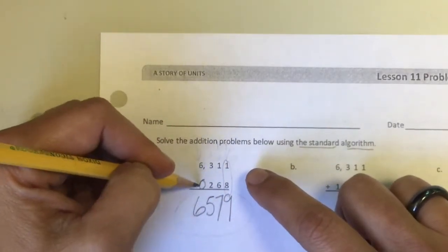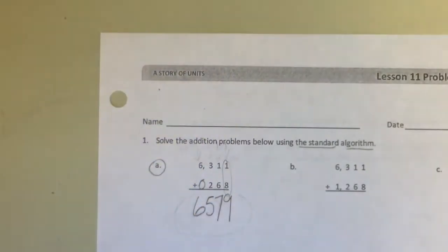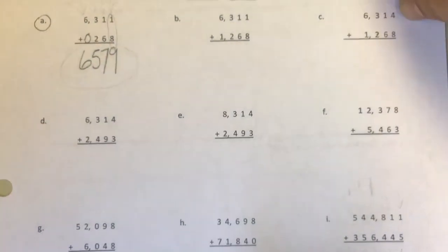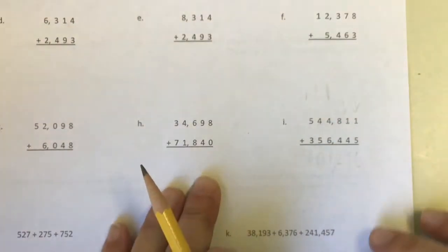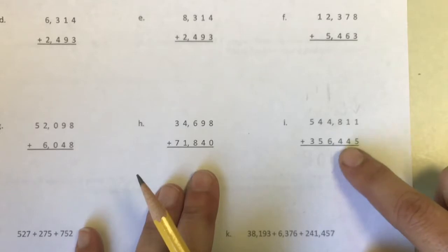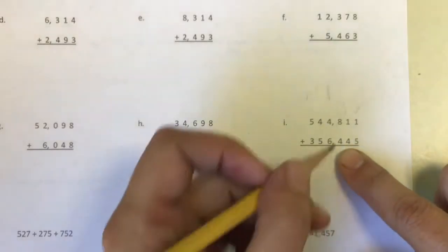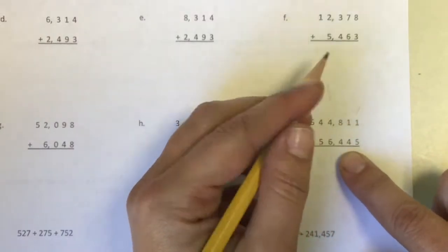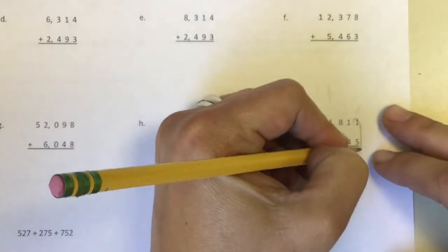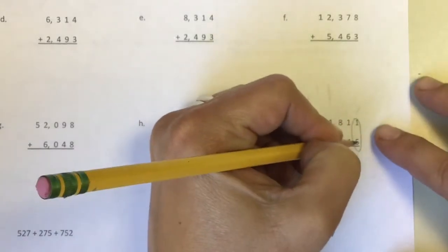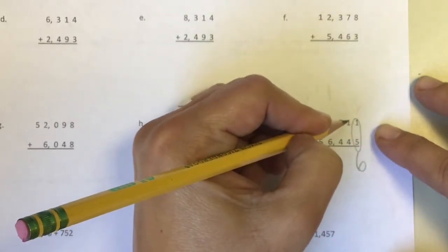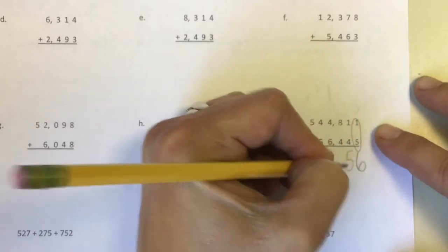So let's go ahead and move our paper down here and let's add this one with really big numbers. So you can see I've been thinking about this problem and I always want to start in the ones place, 1 plus 5 is 6, then move to the left, 1 plus 4 is 5.